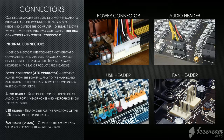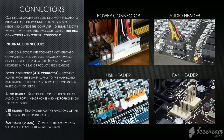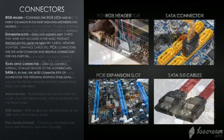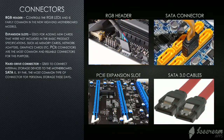The next one is the USB header, which is responsible for the functions of the USB ports on the front panel. The fan header, or the SIS fan, controls the system fan speed and provides them with voltage. The RGB header controls the RGB LEDs and is fairly common in new high-end motherboard models.